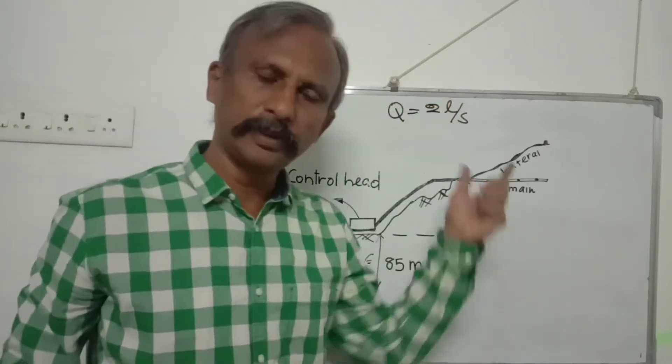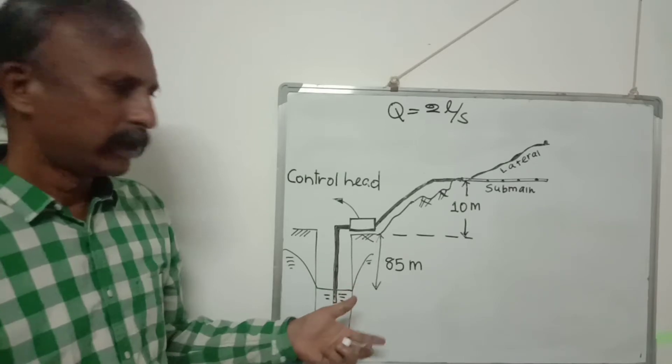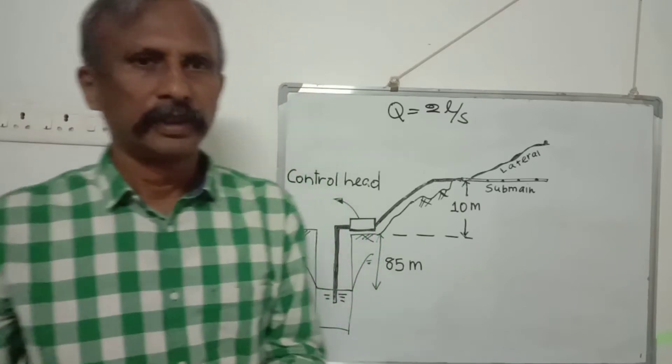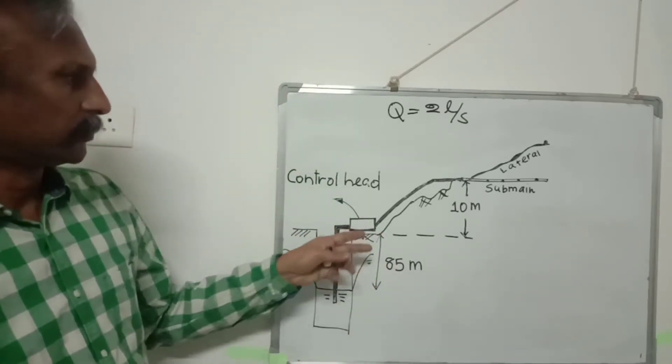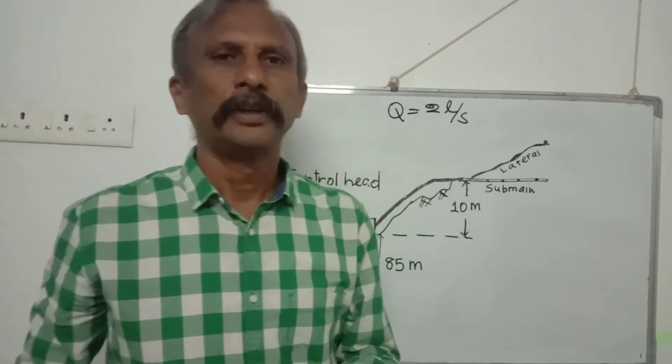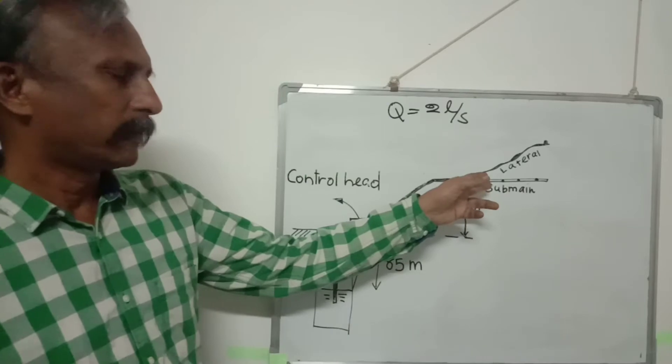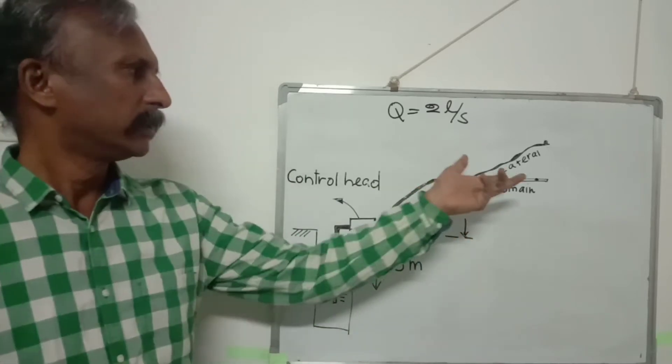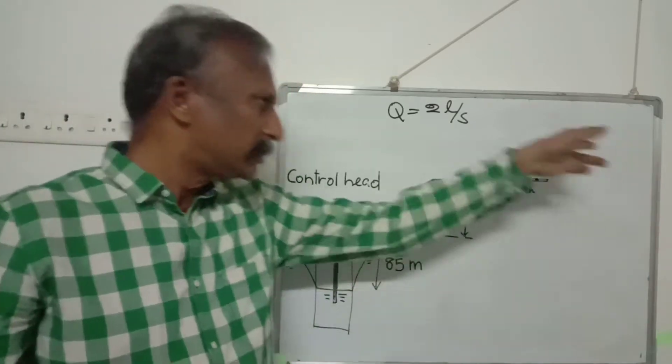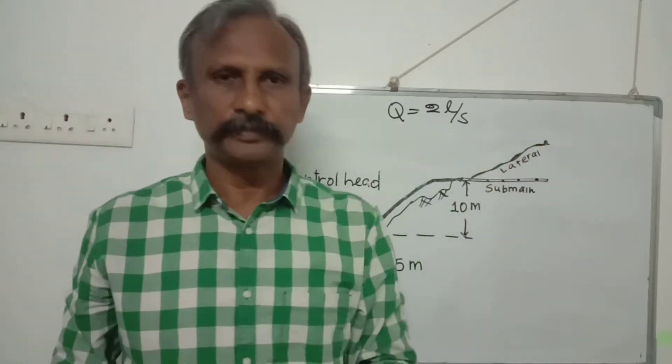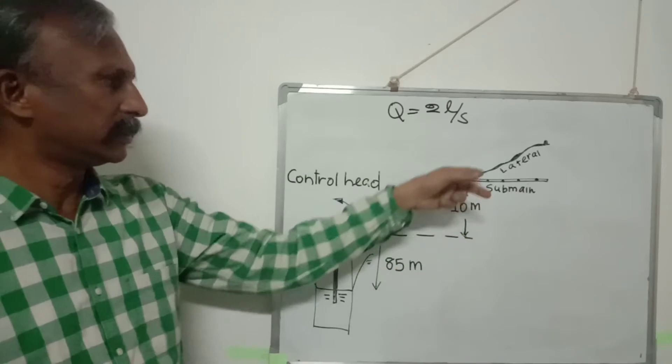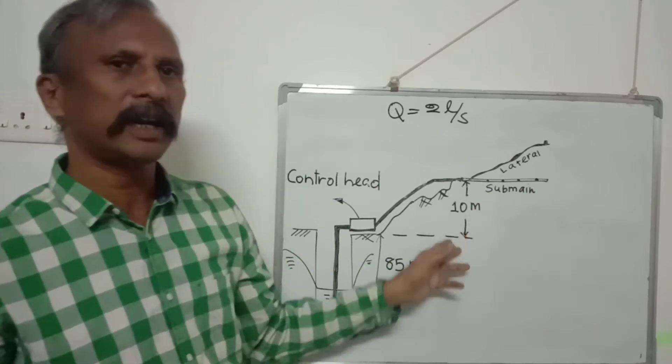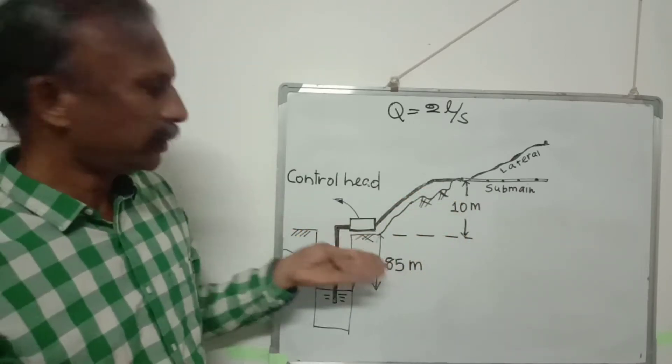For a discharge rate of 2 liters per second, the depth of water level should be approximately estimated. Let us assume that is 85 meters. Next, we should locate where the most critical submain is. The most critical submain is one for which it is very difficult in this system to carry water to that place. Let us assume that in this system, the most critical submain is at 10 meters height from the delivery of the pump.